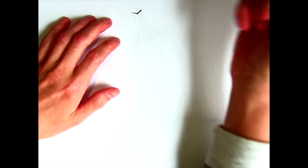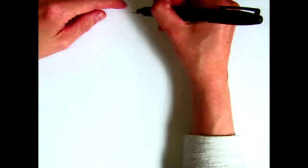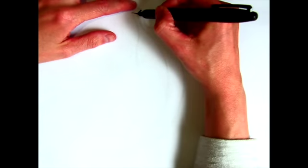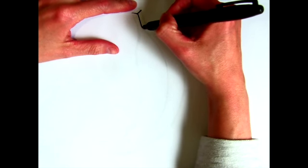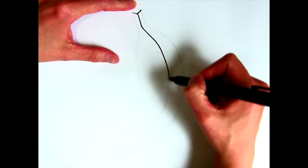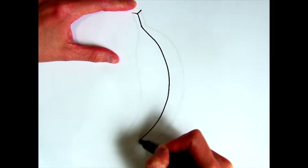So we're going to start right at the top with a little V. This is where it's going to connect to the bunch of bananas. We're going to go straight down from there and then curve around, and this is going to be our center line of the banana.